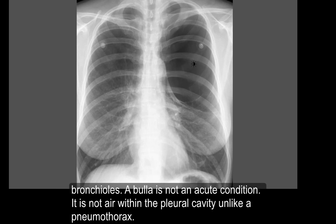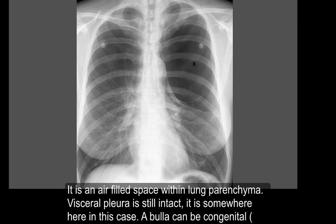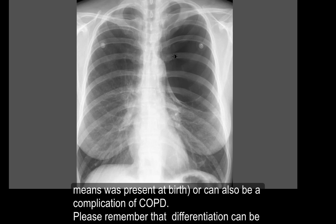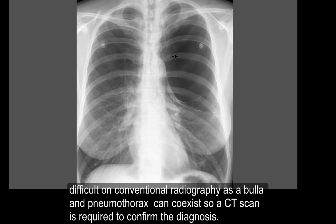A bulla is not an acute condition. It is not air within the pleural cavity, unlike in pneumothorax — it is an air-filled space within the lung parenchyma, and the visceral pleura is still intact. A bulla can be congenital, meaning present at birth, or can also be a complication of COPD. Differentiation can be very difficult on conventional radiography, as a bulla and pneumothorax can coexist, so a CT scan is required to confirm the diagnosis.